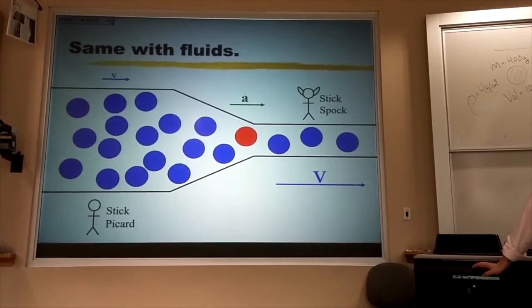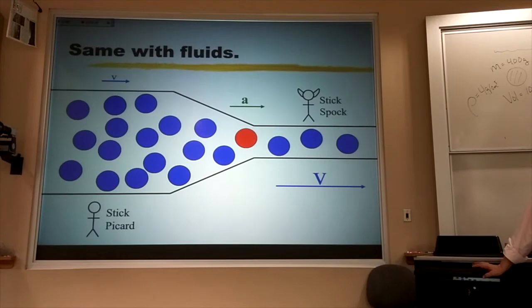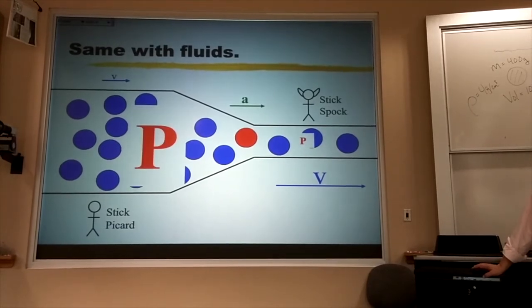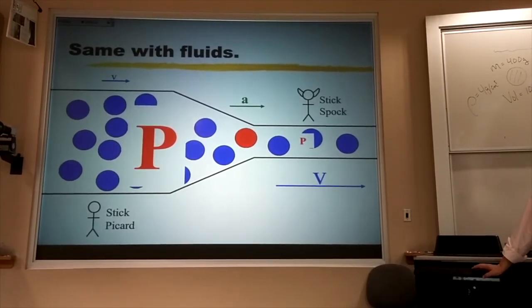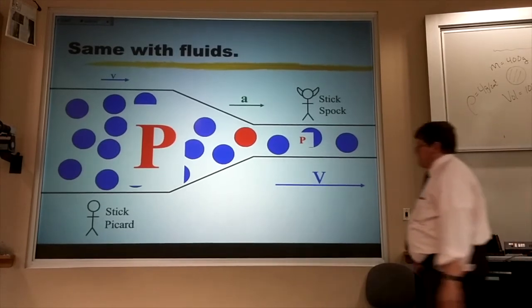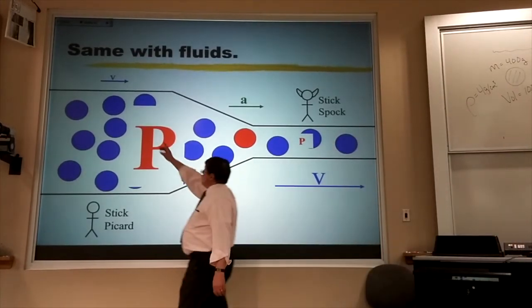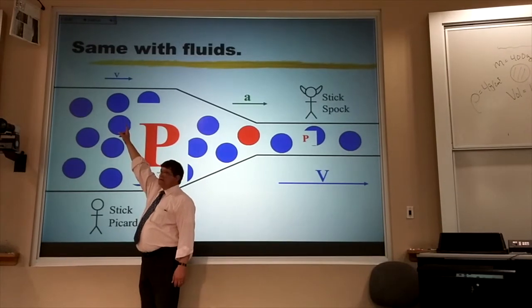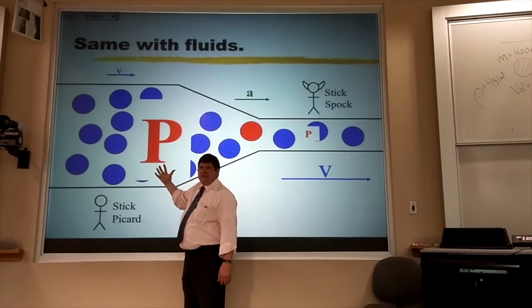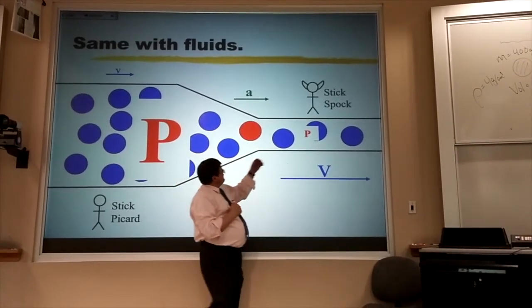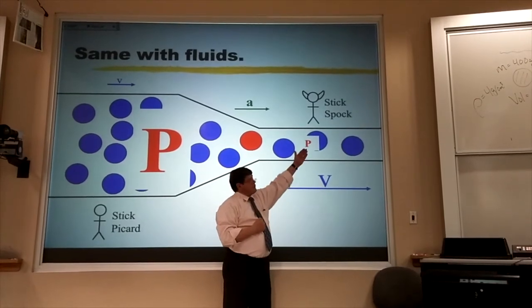Now, the only way I can accelerate that chunk to the right is if it has a high pressure behind it and a low pressure in front of it. Now, look at the trade-off here. Where the speed is small, the pressure is large. Where the speed is great, the pressure is small.